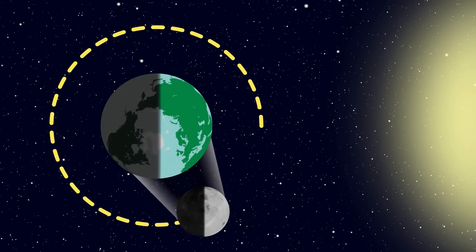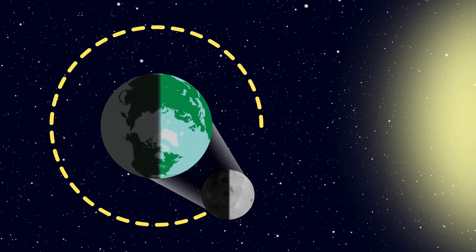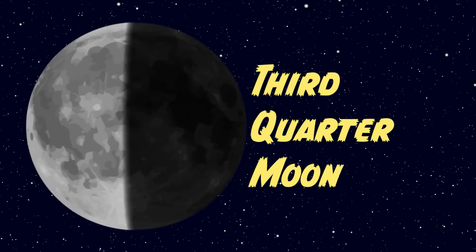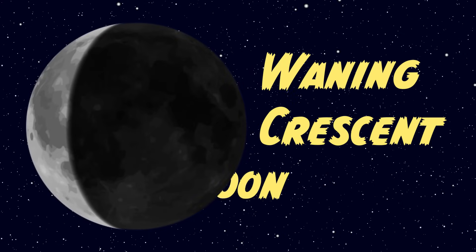The moon continues its orbit around the Earth, rising and setting later and later, and again reaching the curved shape of its final phase. This time, it's called the waning crescent moon.